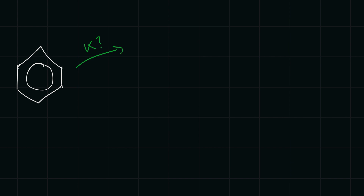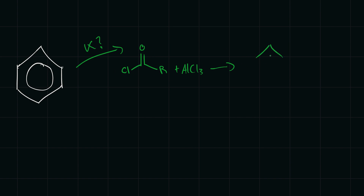Now let's look at a benzene. If we have a benzene, can we create a ketone or aldehyde? Yes we can. One way to create a ketone is called Friedel-Crafts acylation. What we do is provide this benzene with an acyl chloride, or acid chloride. This has a carbonyl group connected to a chloride, and then any R group. If we add this with aluminum chloride as our catalyst, what ends up happening is we add the acyl group onto the benzene and it gets rid of that chloride. We get this product right here, and if you notice, this is a ketone.